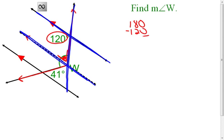What I notice here is that I have the 120 degree angle, and then this angle right here would be a consecutive interior angle with the 120 degree angle. Therefore, the two of them together equal 180 degrees. If I subtract the 120, I find out that this little angle in here is going to be 60 degrees. That's part of my angle W.